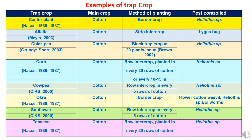Examples of trap crops: In the main crop of cotton, various crops are grown as trap crops to control different pests. Castor plants are used as a border crop to control Heliothis. Alfalfa is used as strip intercropping to control Lygus bugs. Chickpea is grown as a block trap crop to control Heliothis. Corn is grown as a row intercrop to control Heliothis bollworms. Cowpea is grown to control Heliothis as intercropping. Okra is used as a border crop to control flower cotton weevil and Heliothis bollworms. Sunflower and tobacco are also used as trap crops in cotton to control Heliothis.